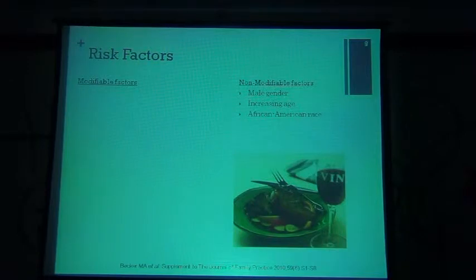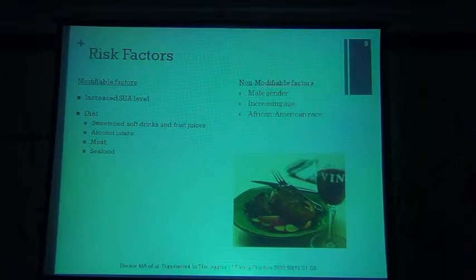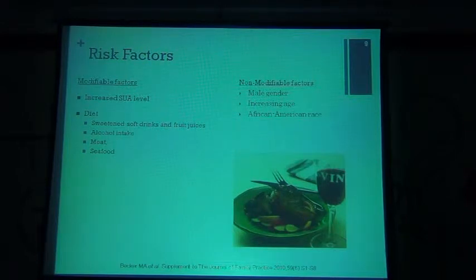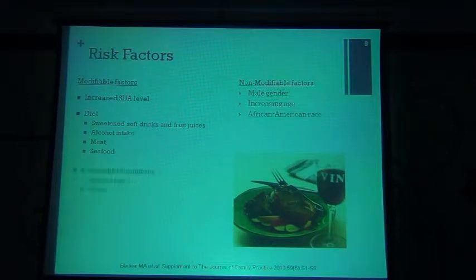The modifiable risk factors include increased serum uric acid levels. Diet is very important — increased consumption of sweetened, aerated drinks; sugary drinks increase uric acid production. Alcohol intake is a double-edged thing: it increases uric acid production and reduces uric acid excretion. Meat and seafood with high purine content lead to breakdown of proteins, thereby releasing uric acid.